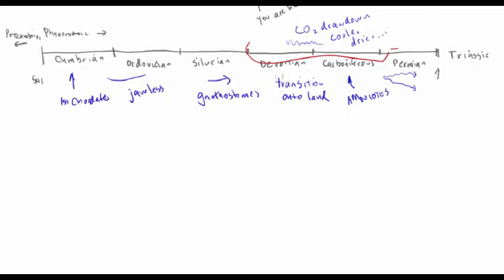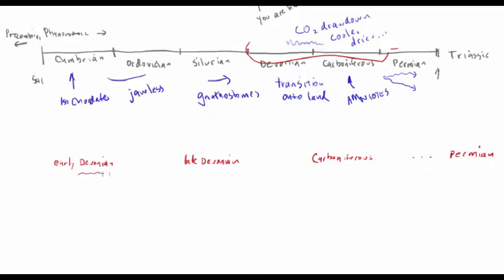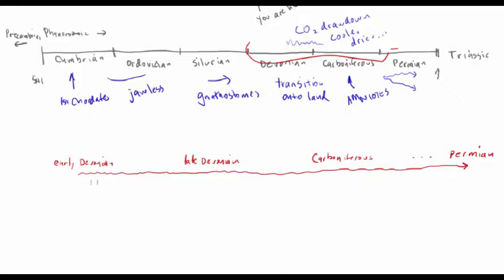This is a time in which the vertebrates make their move onto dry land. If we look from the early Devonian through the later Devonian into the Carboniferous and finally over to the Permian, we see a progression of climatic changes that are really crazy. During the Carboniferous there was a drawdown of CO2 — things got really cold and drier, and things dried out even further in the Permian. But the early Devonian is kind of where it all starts.